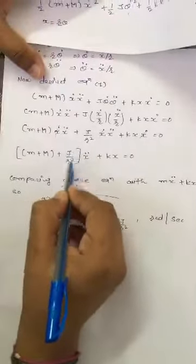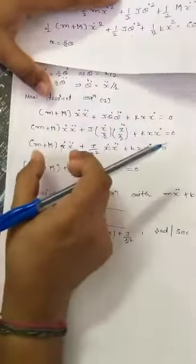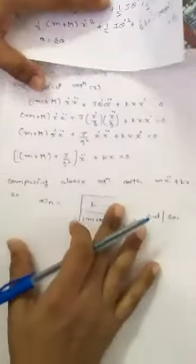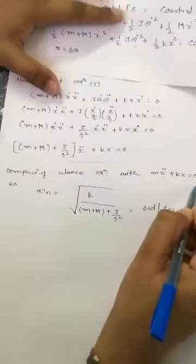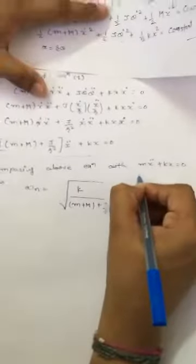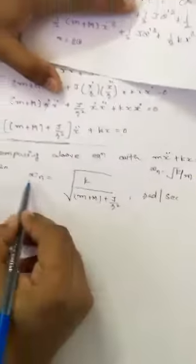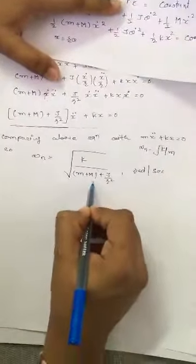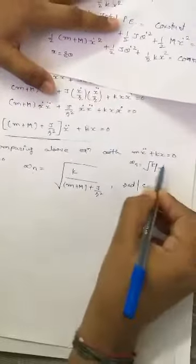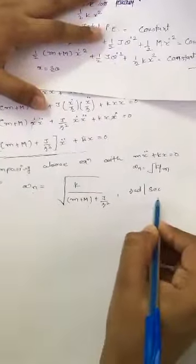This equation has the same form as the standard characteristic equation m x-double-dot plus k x equals zero, where the natural frequency is omega_n equals the square root of k/m. Comparing, we get omega_n equals the square root of k divided by (m plus M plus J/r squared). The unit is radians per second or Hertz.